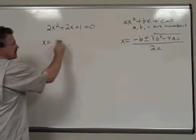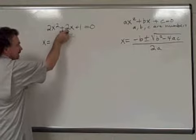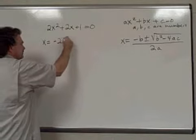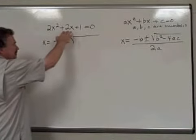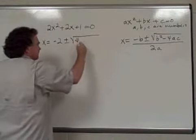So this says x equals the opposite of b. The opposite of positive 2 is negative 2, plus or minus the square root of b squared. b squared is 2 squared, that's 4,